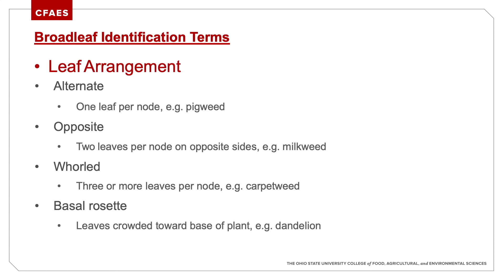Leaf arrangement — alternate, opposite, whorled, basal rosette — are all really helpful. We cover specific species and give a family overview. If you're trying to identify something and want to send pictures or call, I'll often ask about the leaf arrangement or attachment. This is terminology to make sure we're all speaking the same language. Once we're on the same page, it's easier to move forward.